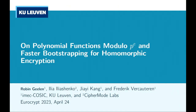The next talk is 'Polynomial Functions Modulo p^{2e} and Faster Bootstrapping for Homomorphic Encryption' by Robin Gillen, Ilia Ilyashenko, Jakia Ikan, and Frederik Vercauteren. Robin will give the talk. My name is Robin Gillen and I will present our work on polynomial functions modulo p^{2e} and its application to faster bootstrapping for homomorphic encryption — a joint work with Ilia, Jai, and Frederik.